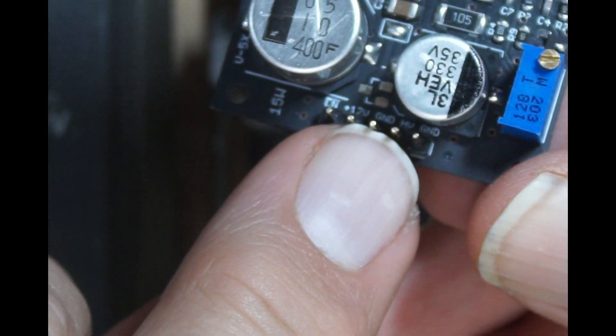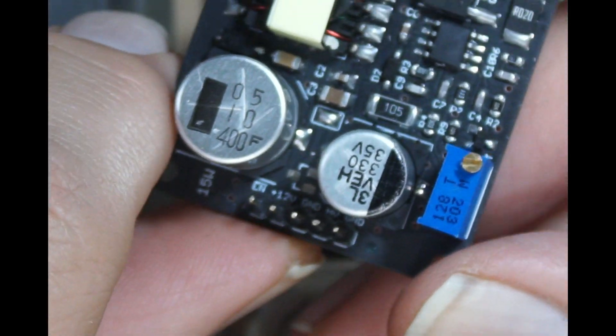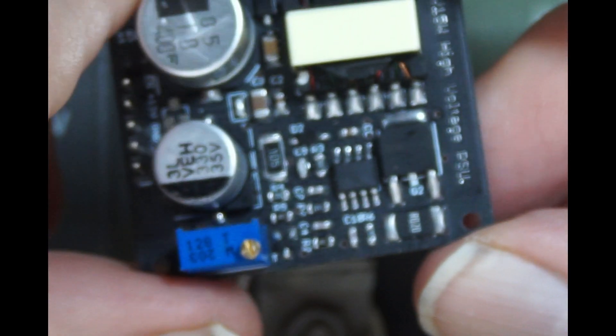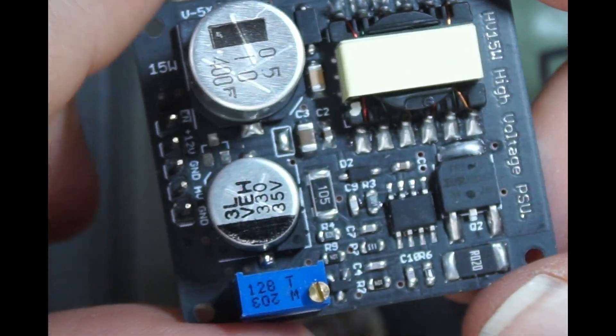I measured the resistance between these two ground pins and they're connected together. So this is a non-isolated DC to DC converter, which means it has a shared ground between the input and output.